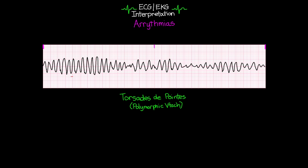If you look at the morphology of these beats here compared to these beats here and these beats here, you can see they're quite different, telling us that these impulses are coming from different parts of the heart and therefore being captured differently on our ECG. More often than not, this is going to be a pulseless rhythm for your patient, making it another lethal rhythm — typically as a result of either prolonged QT or some sort of electrolyte imbalance. Just know that this is a different form of VTAC that you're going to have to be able to identify.